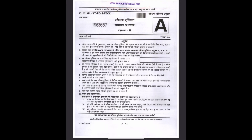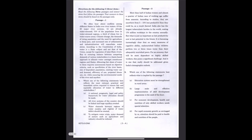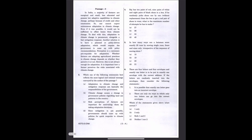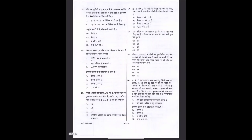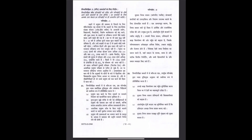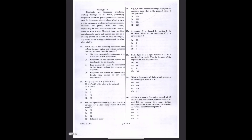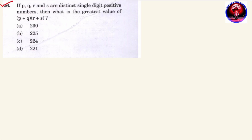Hello friend! In this video we are going to see UPSC CSAI 2023 Set A, Question Number 26 solution. The question says: if P, Q, R and S are distinct single digit positive numbers, then what is the greatest value of (P + Q) × (R + S)?